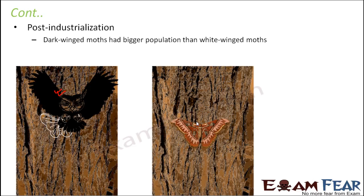In a way, you can say the dark-winged moth evolved from the white-winged moth — the white-winged moth represented the past and gradually became less prevalent. This is evidence for evolution, showing that many varieties of organisms can exist at the same time, but environmental factors and predators can determine which ones survive and which ones die off and become extinct.